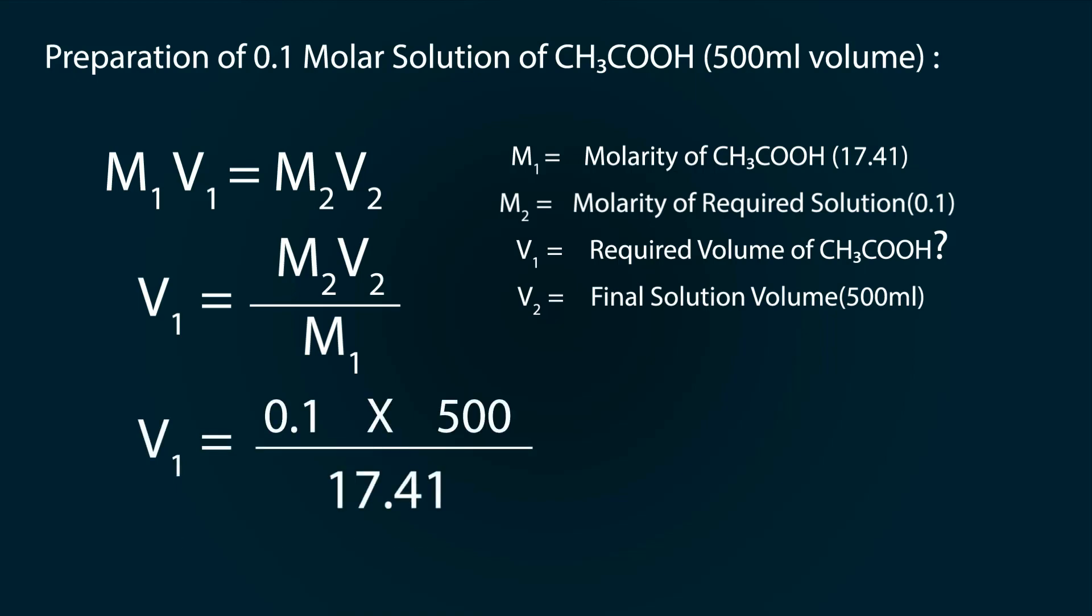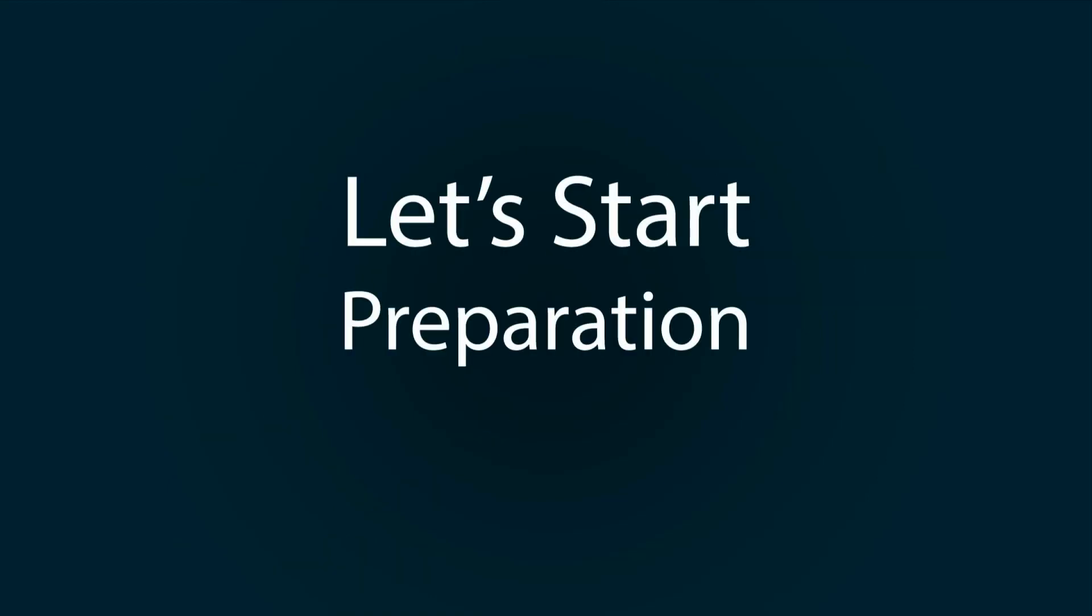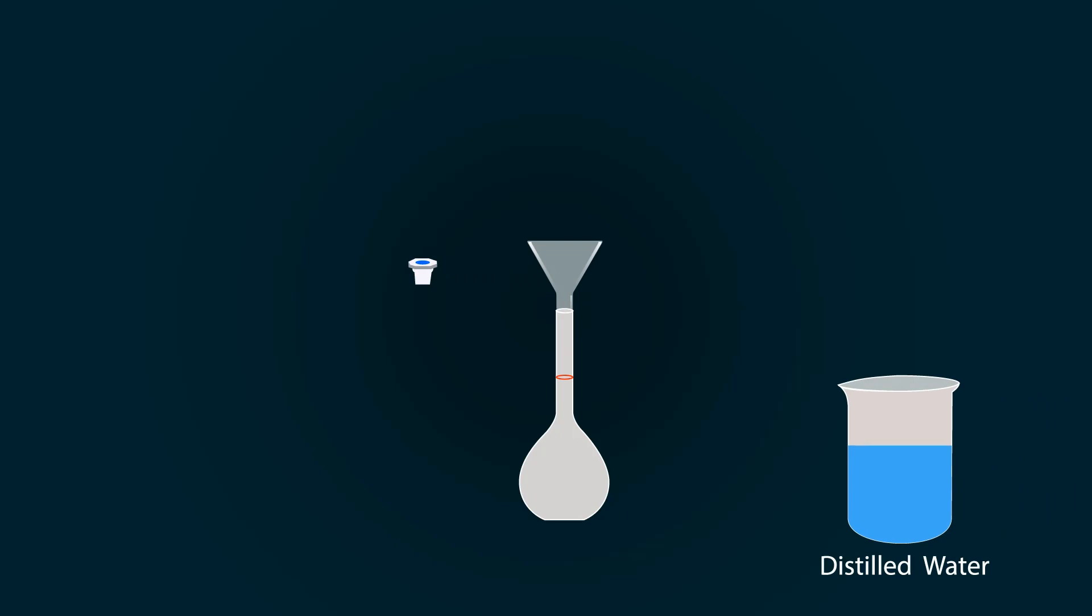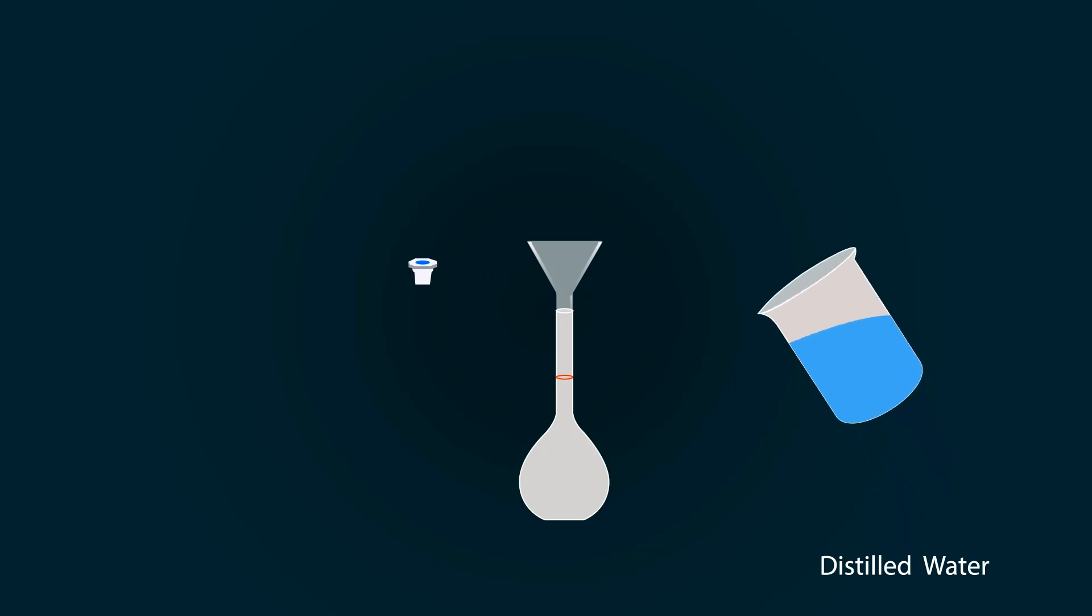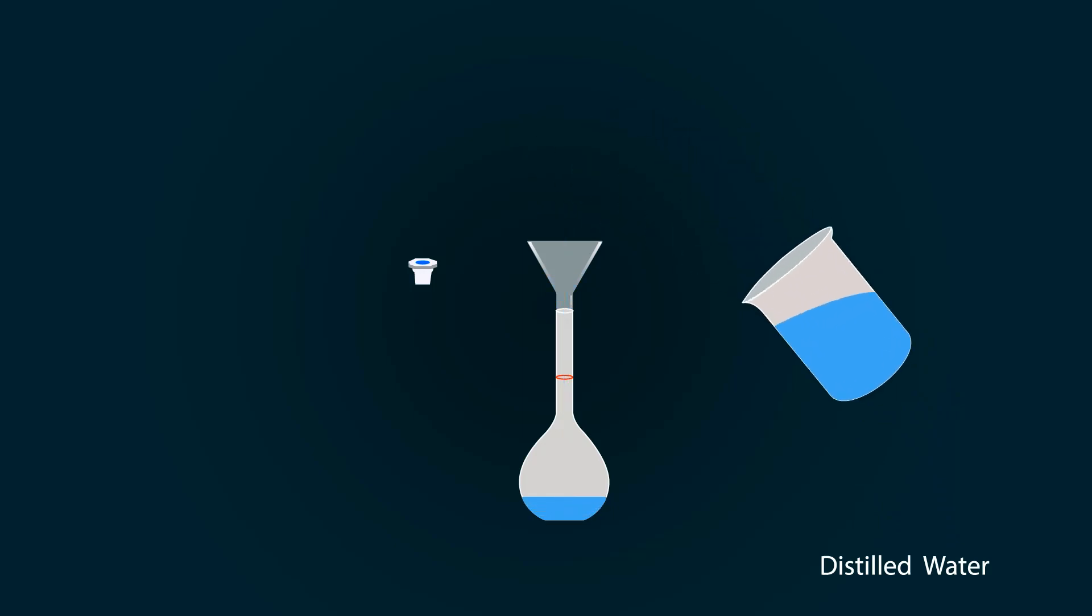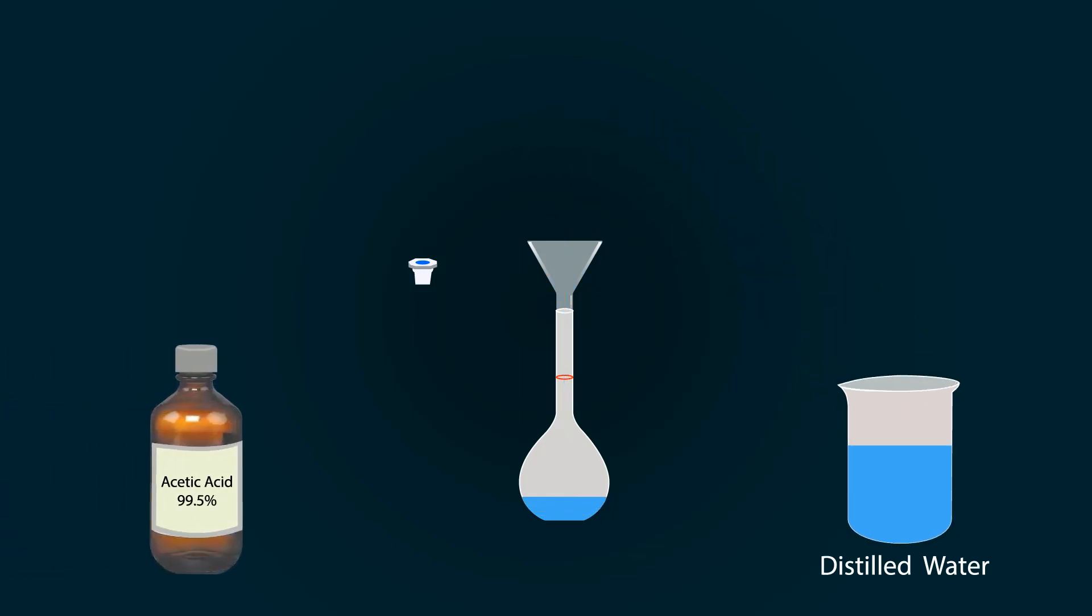Let's start preparation. Take volumetric flask of 500 ml, put the funnel on the top and add some distilled water into it. Please do not add acetic acid directly into the volumetric flask because it may burst.